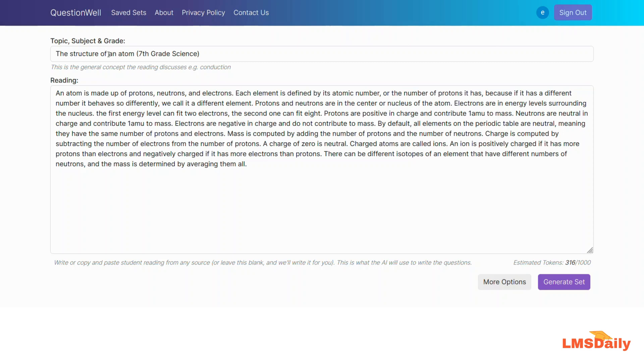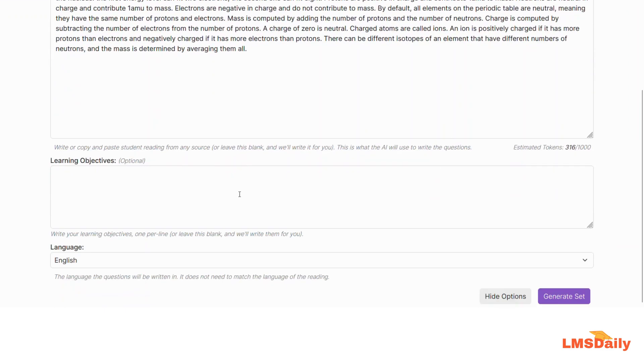Once logged in, mention the topic, subject, and grade in the top field, then paste the text from which you want to generate questions in the reading field. After pasting these fields, you can click 'Generate Set' directly to create questions, or explore more options by clicking this button.